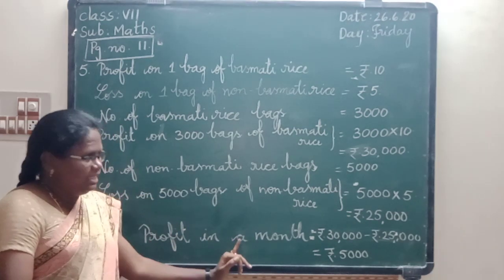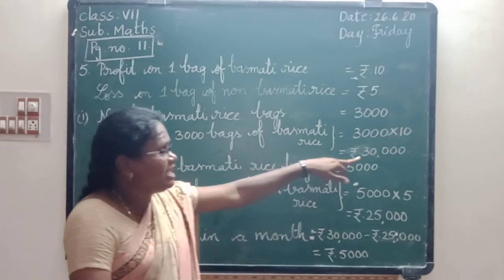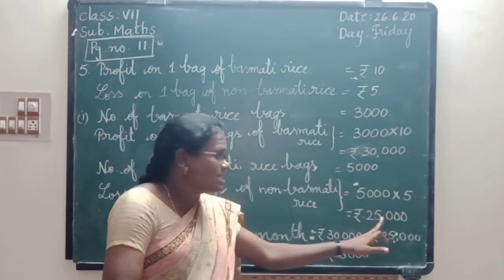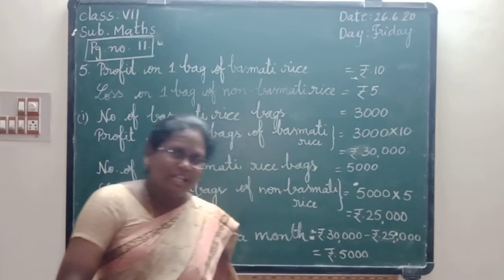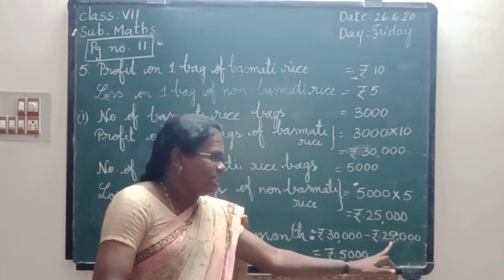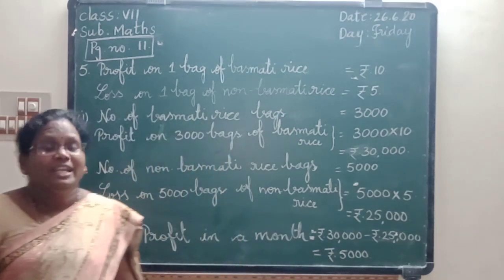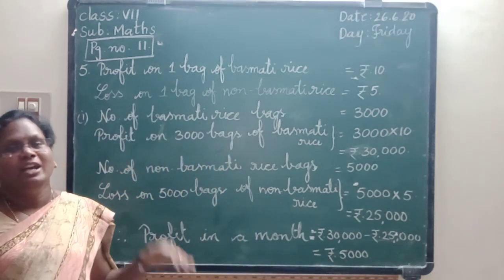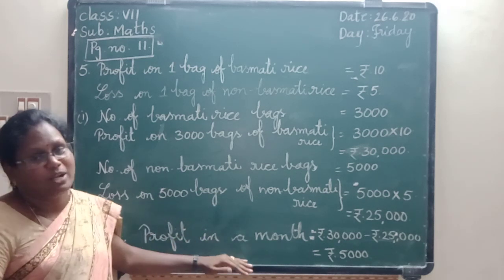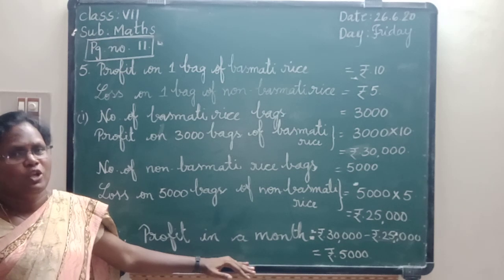So they got profit. Profit in the month equals 30,000 minus 25,000. 30,000 minus 25,000 equals 5,000. That is profit. He got a profit of 5,000 rupees in one month.